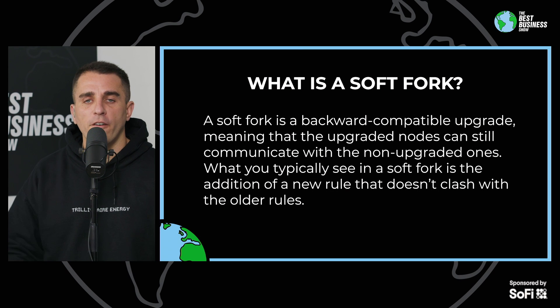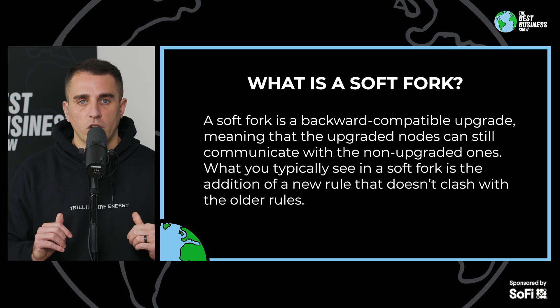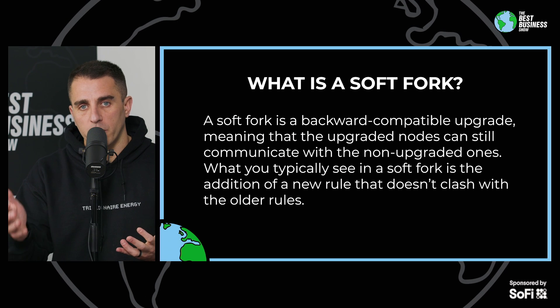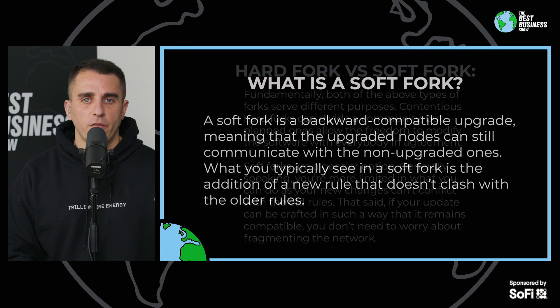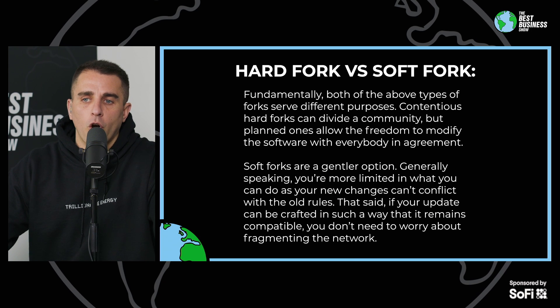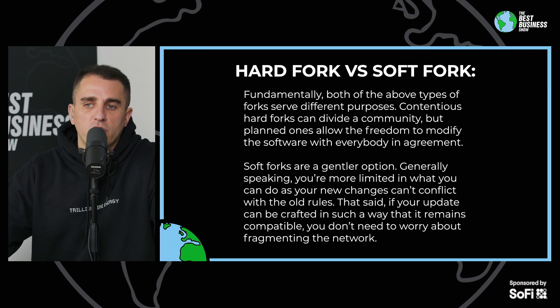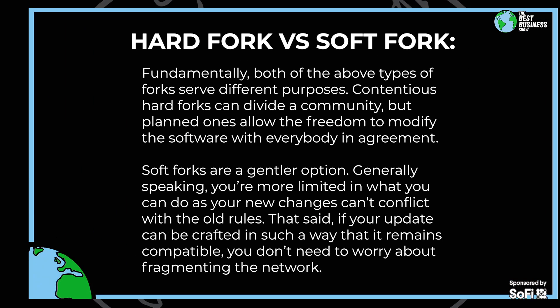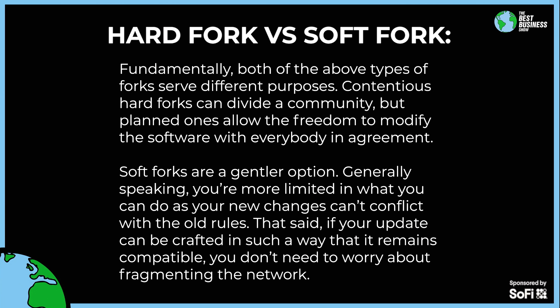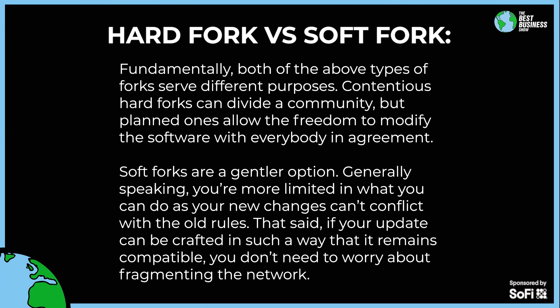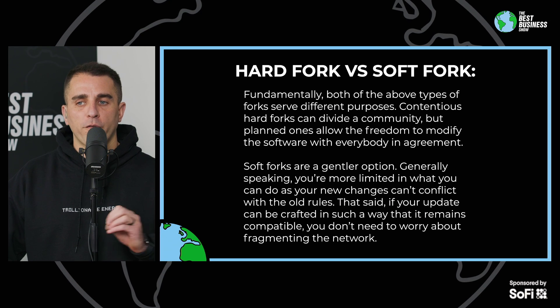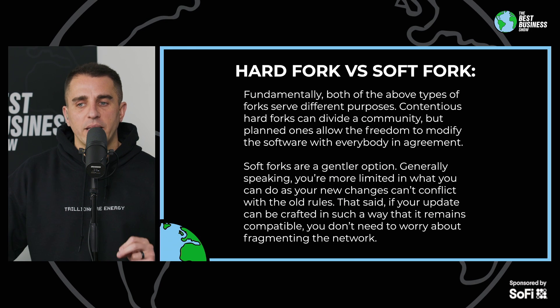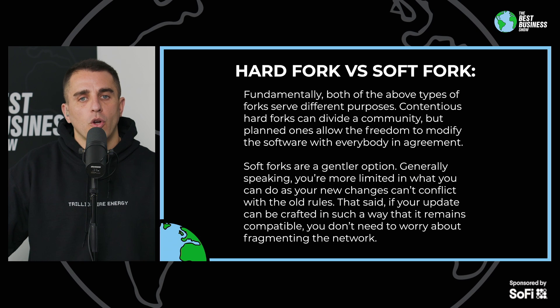A soft fork is very different. A soft fork is a change to the code that is still compatible with the old code, so you can run the old code and still be compatible with the new code and vice versa. Hard fork is aggressive — a big change. Soft fork is less aggressive, not nearly as big a change. Contentious hard forks can divide a community, but planned ones allow freedom to modify software with everybody in agreement. Soft forks are a gentler option — you're more limited in what you can do, as new changes can't conflict with old rules. But if your update remains compatible, you don't need to worry about fragmenting the network.